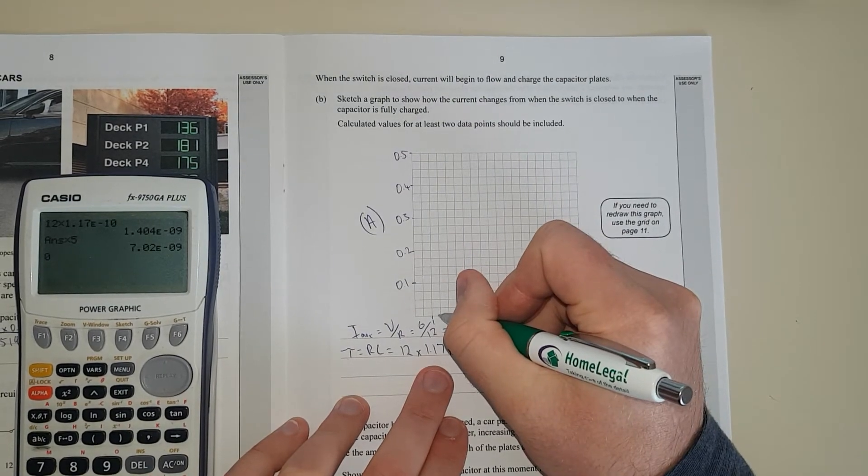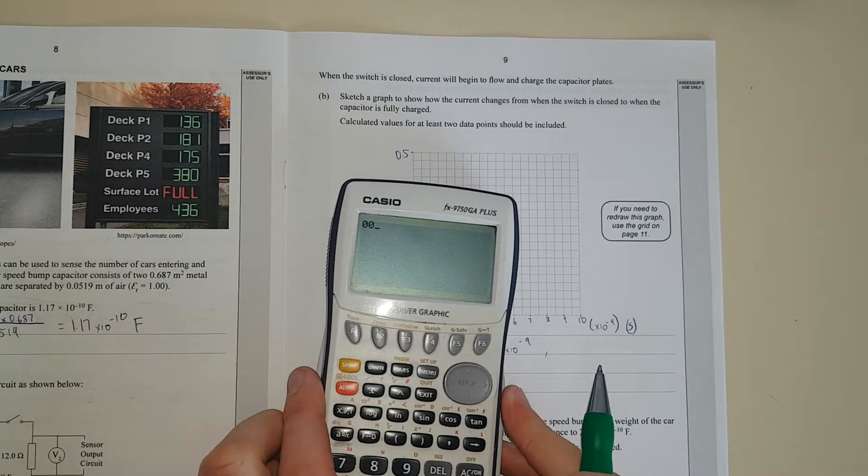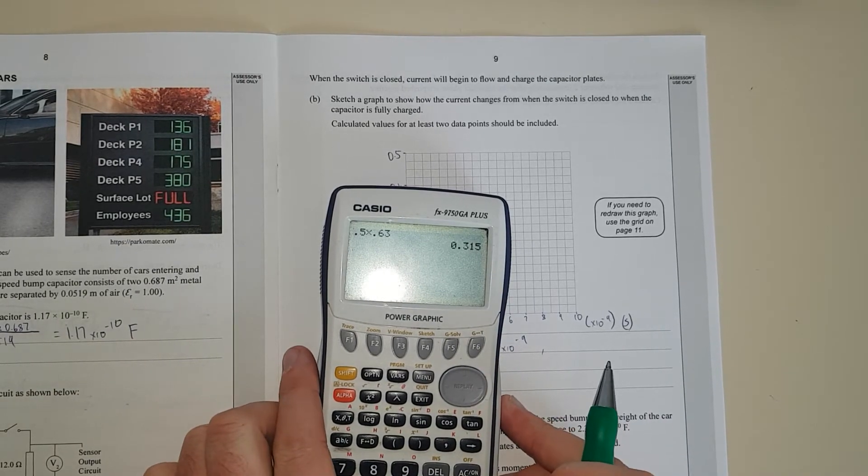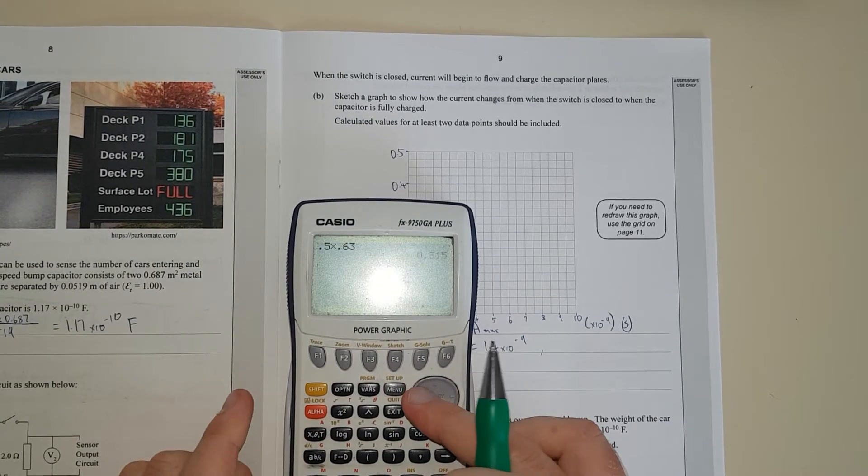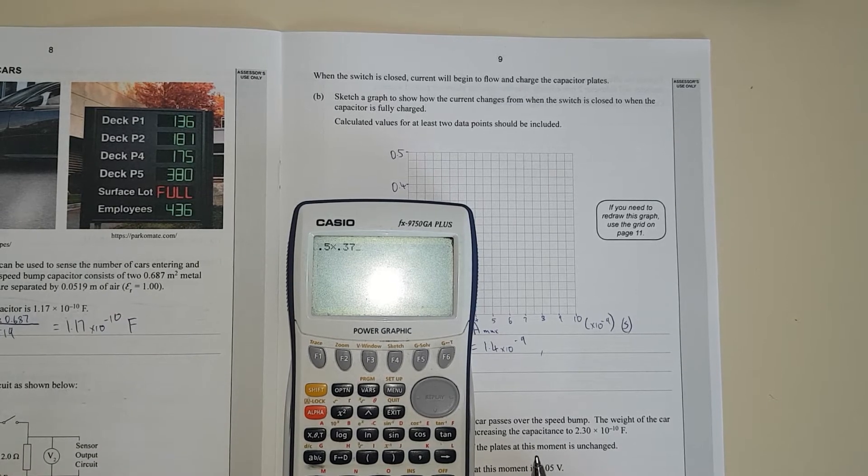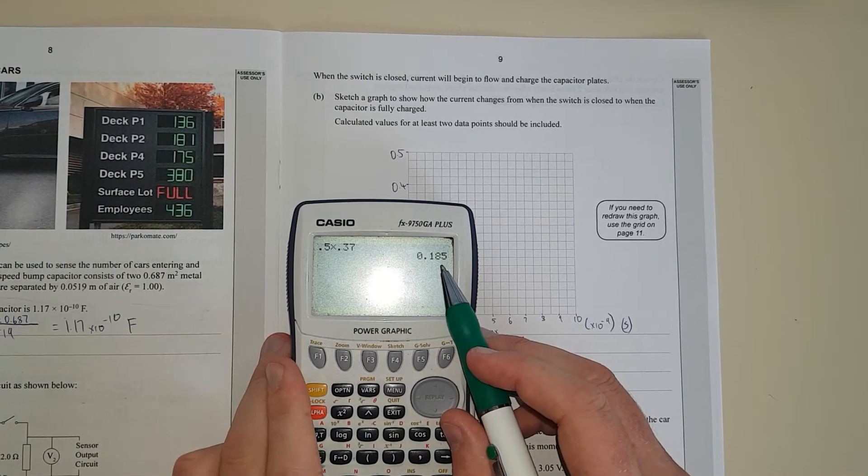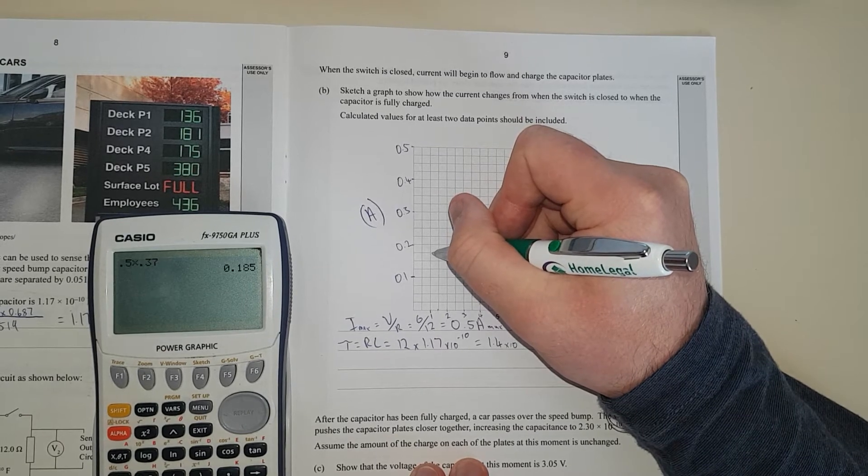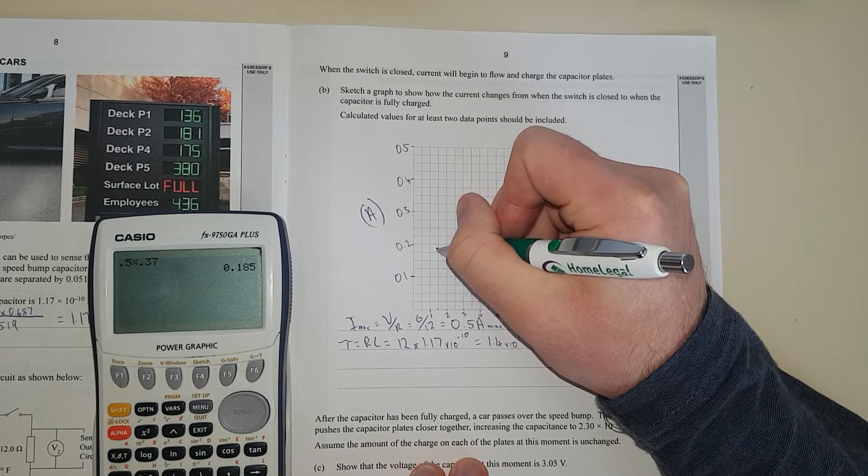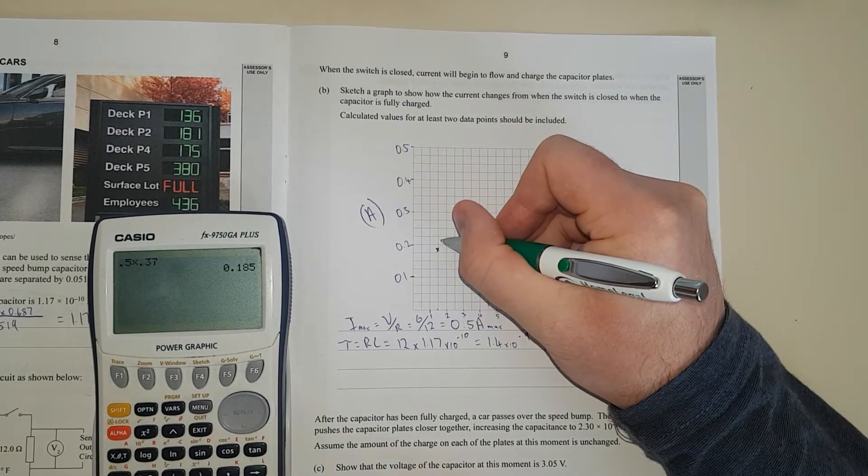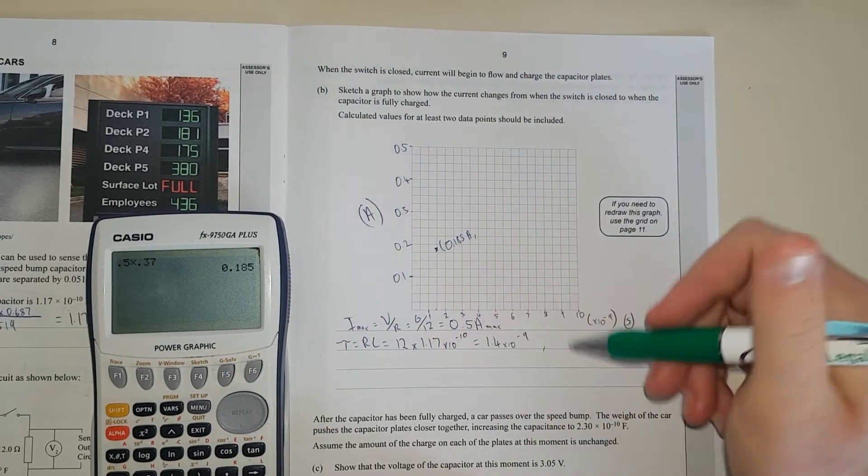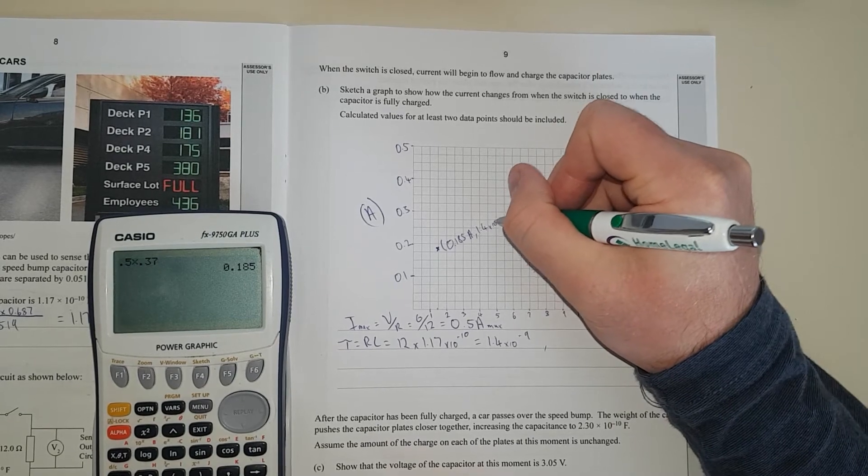And now I need to find out. So one time constant is 1.4 nanoseconds. So it's around about here somewhere. So I need to go 0.5 times 0.37. Because it's going to decrease by 63%. So that's 63% off. It's 37% of the original. So now we have current of 0.185 amps. And that'll be at the time of 1.4. So I'm going to go up to 0.185. If I can get there somewhere. And 1.4 is about here. There's my first data point. And I'm going to just chuck it in. So I'm going to have 0.185 amps at 1.4 times 10 to the negative 9 seconds.